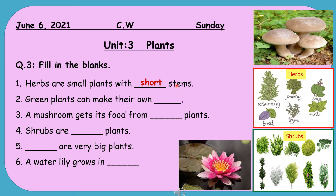Number 2: Green plants can make their own _____. What can they make? Their own food. Yes, green plants can make their own food. Number 3: A mushroom gets its food from _____.